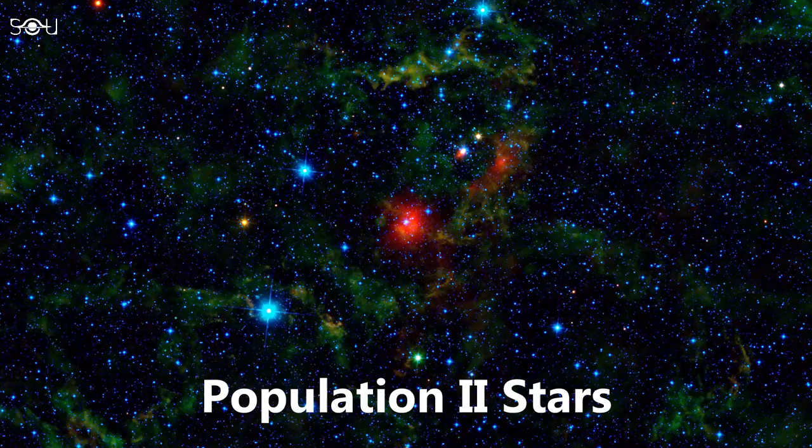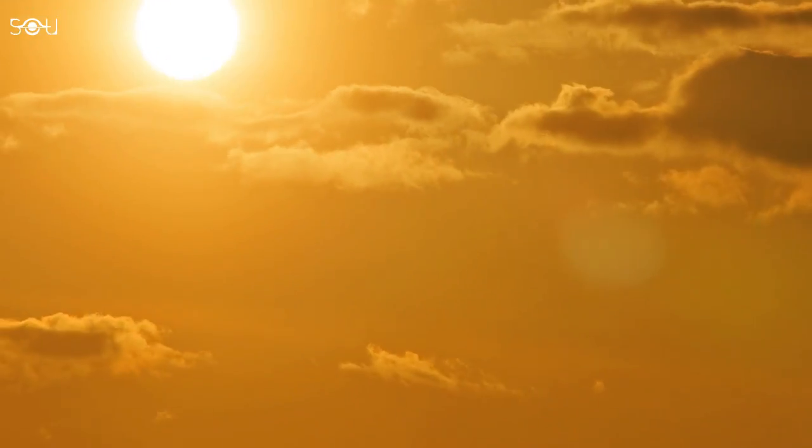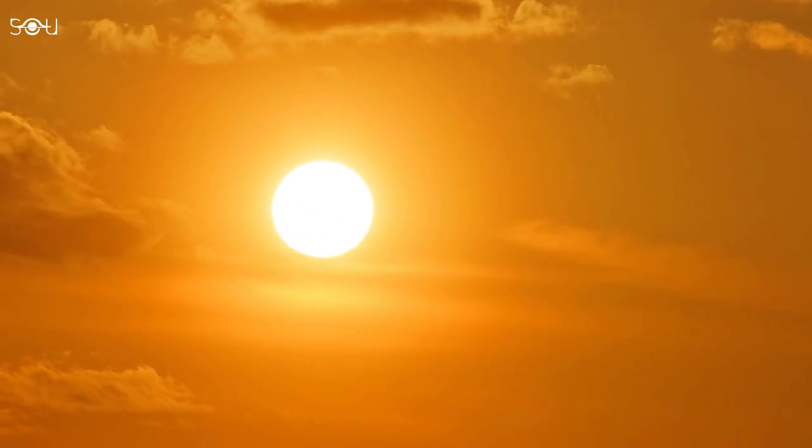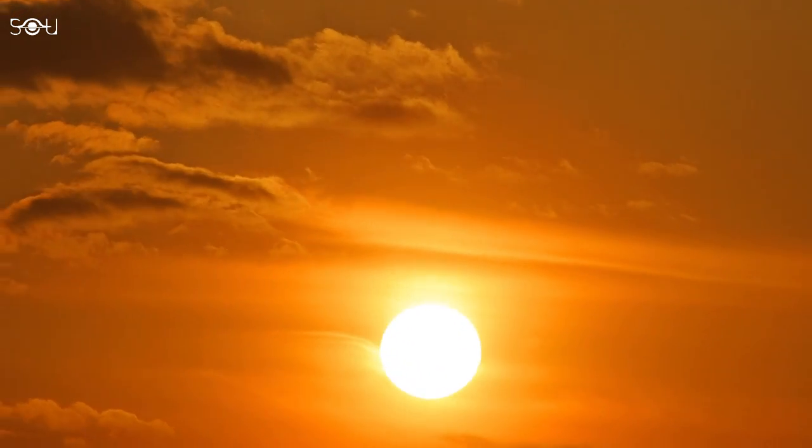Repeating the same process, population 1 stars with even more metal content started forming. Our sun is a metal rich population 1 star. It has high metallicity. That is, high proportion of heavier elements other than hydrogen and helium.